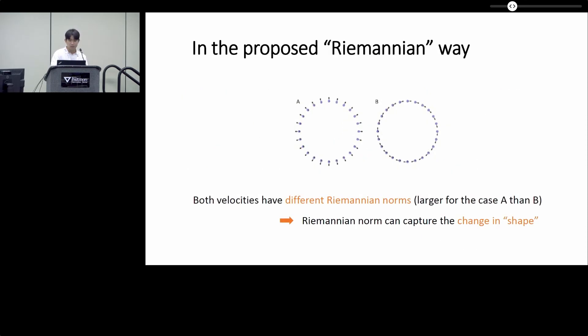As a result, the proposed Riemannian norm can capture the shape change in the point cloud. And the case A and B have different norms, larger for the case A than B.